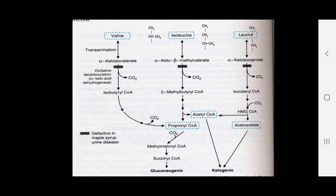The second step is oxidative decarboxylation. Valine forms isobutyryl-CoA; isoleucine forms 2-methylbutyryl-CoA; leucine forms isovaleryl-CoA. From valine, propionyl-CoA is formed, going into the glucogenic pathway. From isoleucine, acetyl-CoA and propionyl-CoA are formed. From leucine, acetoacetate and acetyl-CoA are formed.